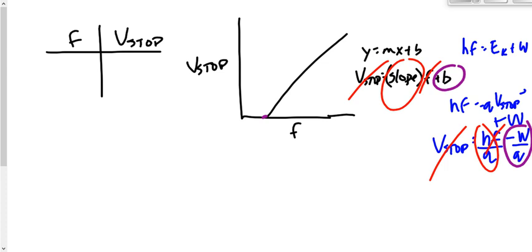The x-intercept here — is it the threshold frequency? Above that frequency, you need a potential difference to stop the electrons because the electrons have been ejected. Below that frequency, there is no V-stop. So yes, the x-intercept is the threshold frequency — not threshold frequency over Q or anything like that, just threshold frequency. So whether you're an engineer designing a solar cell for a house or the International Space Station, or working in a lab to verify Planck's constant at 6.63 times 10 to the minus 34, there are all kinds of things you can do with this experiment.